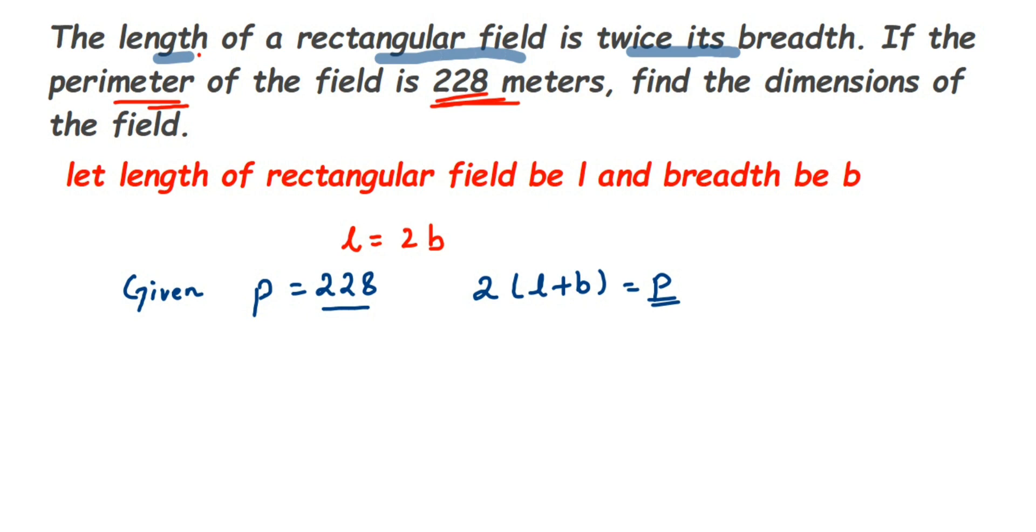So 2 into L plus B is equal to 228. Now see here we got a relationship between L and B before: L is equal to 2B. So in place of length I'm going to put 2B. So it's 2 into 2B plus B is equal to 228.